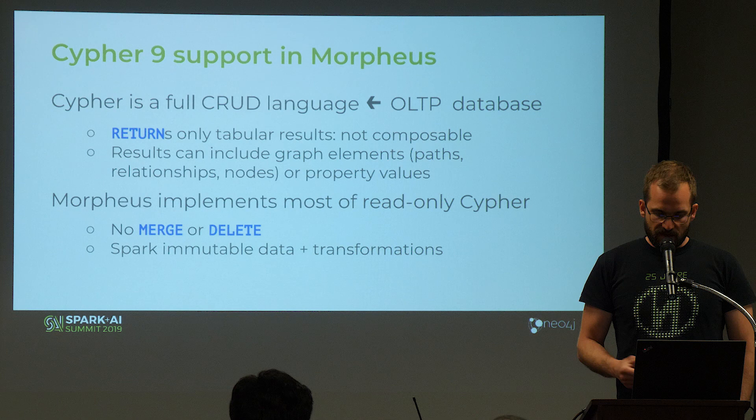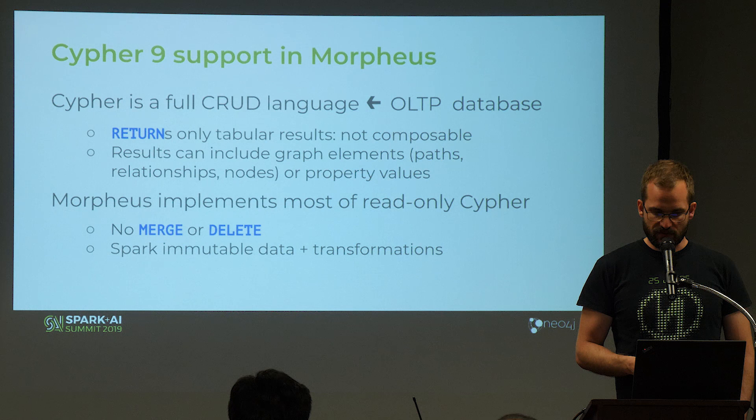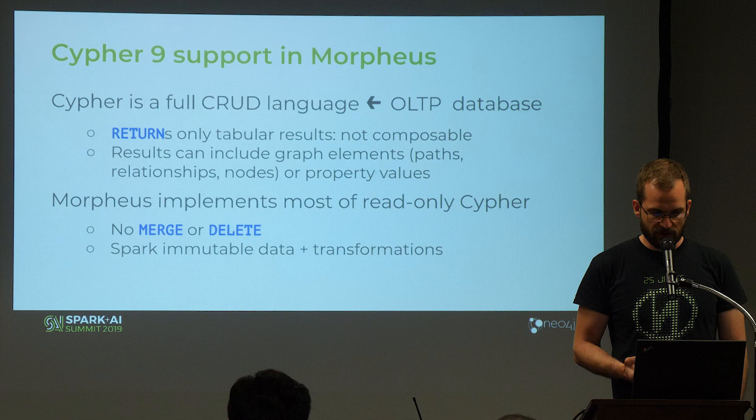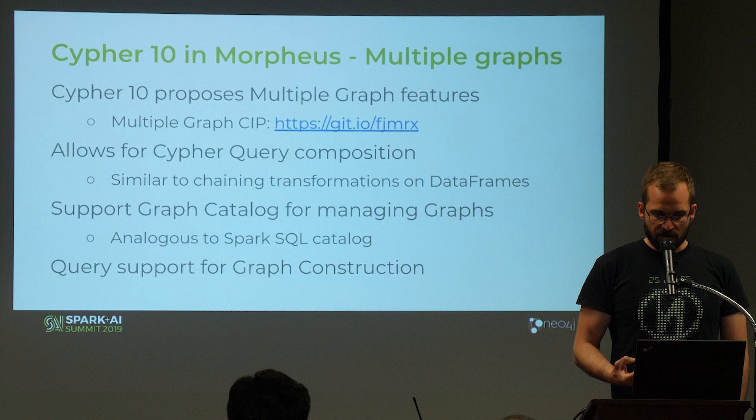By transformations we can create new graphs, which allows you to create new things, but not in the way you'd do it in a Neo4j transactional database. Cypher 10 is the new version of Cypher. It has multiple features and one of them is the support for having multiple graphs. In Neo4j you only have a single property graph describing your whole database, but with Cypher 10 we propose multiple graph features.